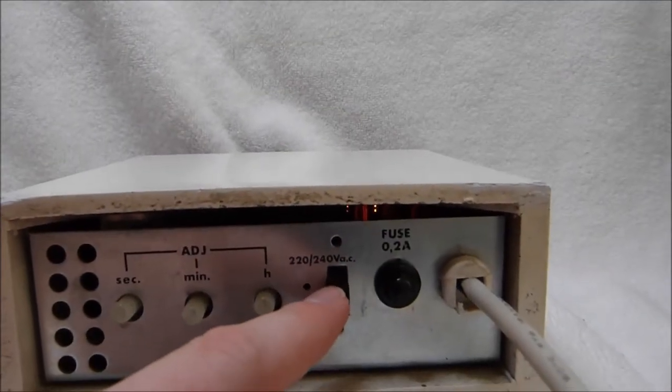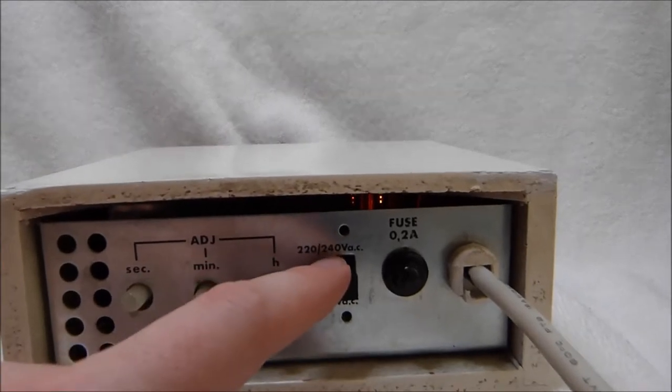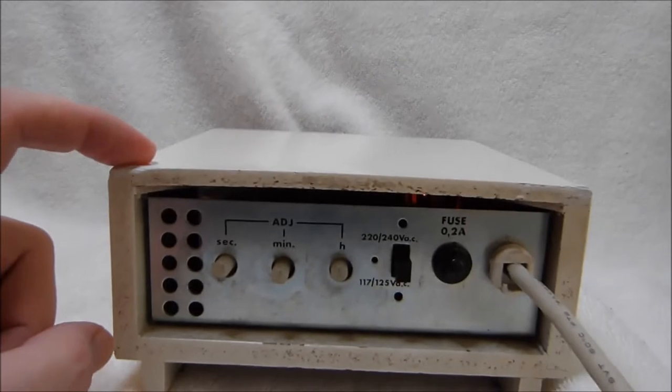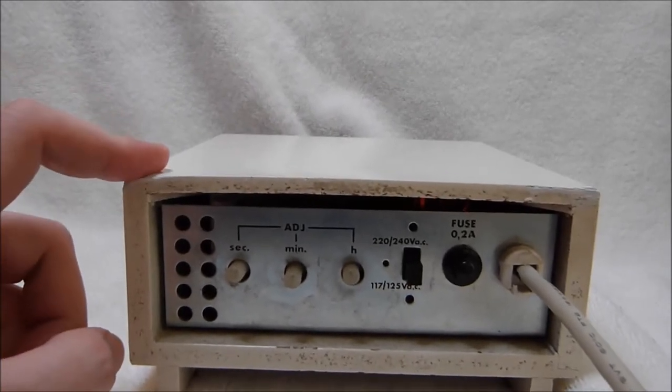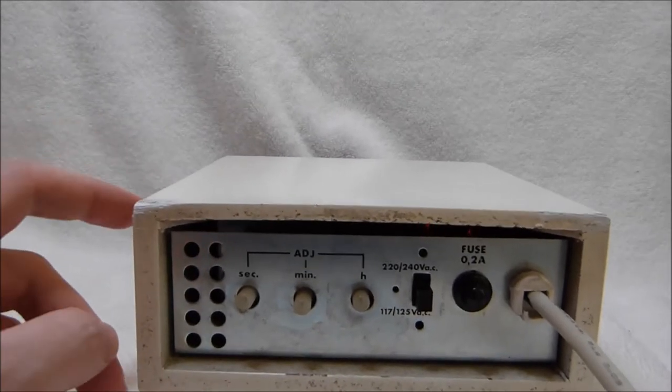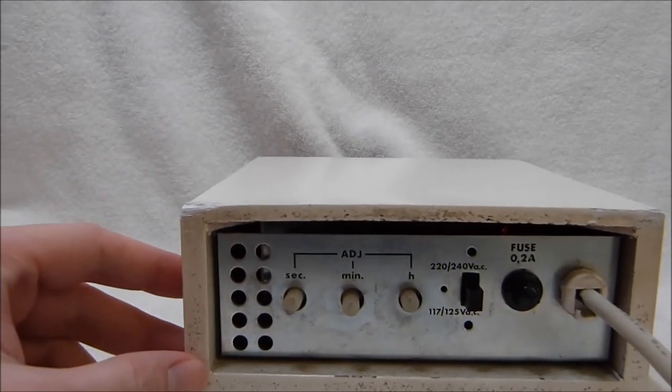Conveniently there was a switch on the back here to switch it over from 240 volts AC to 125 volts AC. However, the clock was designed to run off of 50 hertz, so I had to do some redesigning in order to get it to run off of 60 hertz and keep accurate time.